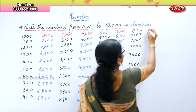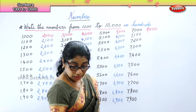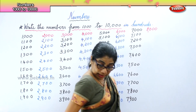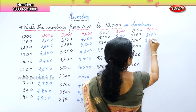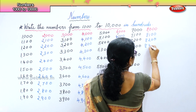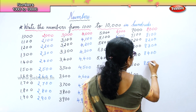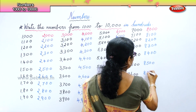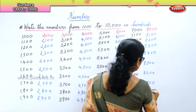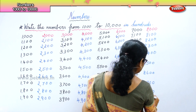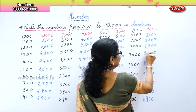Now we get eight thousand. Next we write eight thousand one hundred, eight thousand two hundred, eight thousand three hundred, eight thousand four hundred, eight thousand five hundred, eight thousand six hundred, eight thousand seven hundred, eight thousand eight hundred, eight thousand nine hundred.